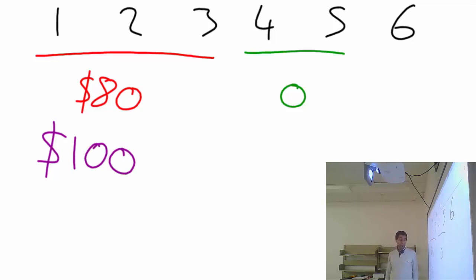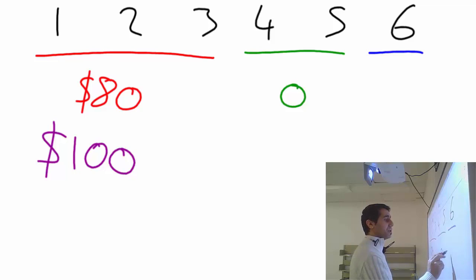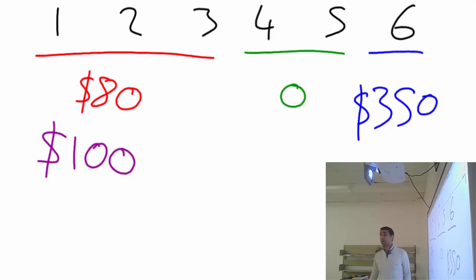The bet for this game is one hundred dollars, so you bet one hundred dollars first to play. When you get four or five, you get nothing — meaning you lose the money you bet. And if you get six, I'm willing to give you three hundred fifty dollars. That's a lot of money. Before we calculate the mathematical expectation, we need to find out whether this game is fair or not.